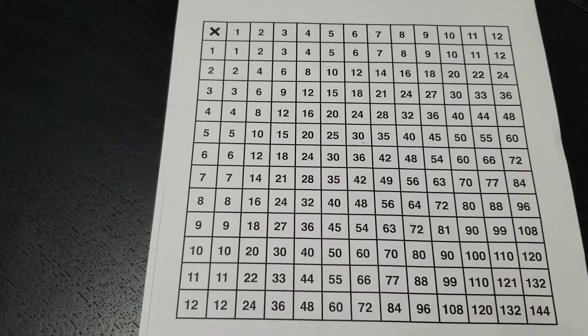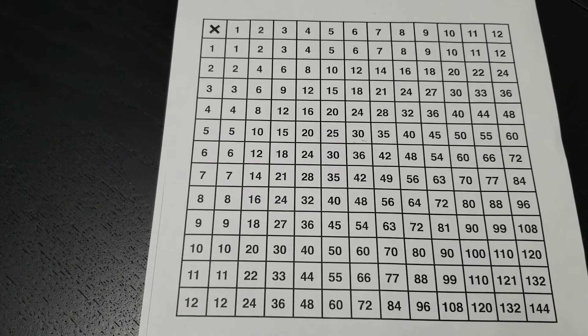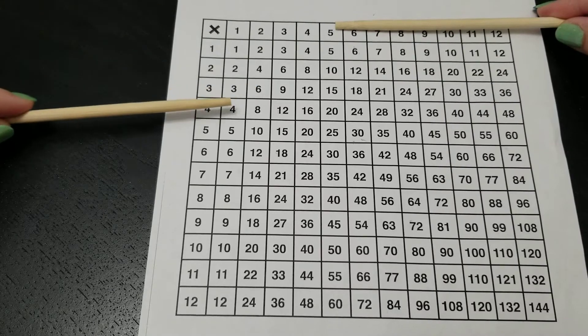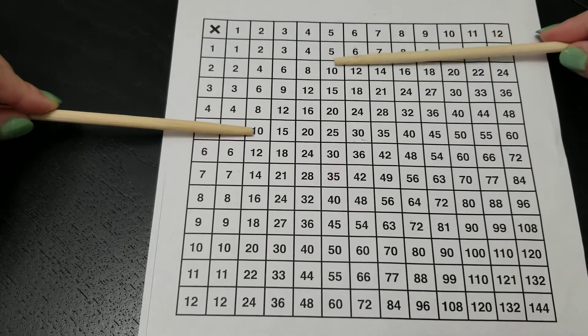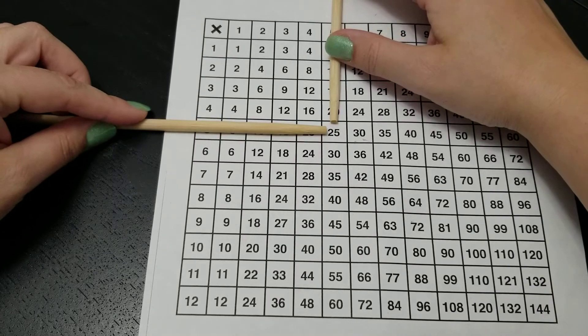Multiplication charts are often used to discover the product for multiplication questions, such as 5 times 5. We would start with the 5, find the other 5, and go straight down or across until they meet the two columns. In this case, 5 times 5 makes 25.